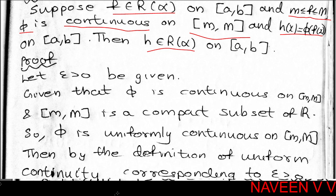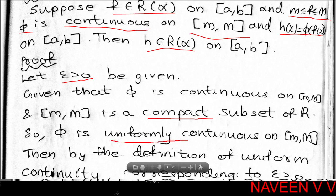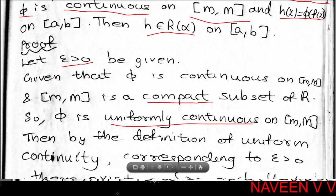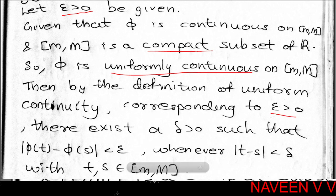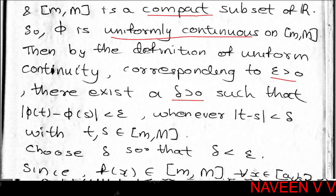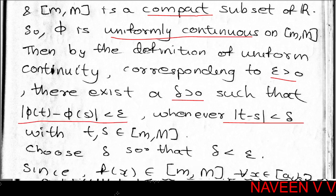Since φ is continuous on closed interval [m, M], and [m, M] is a compact subset of the real line, every continuous function on a compact set is uniformly continuous. So φ is uniformly continuous on [m, M]. By the definition of uniform continuity, corresponding to epsilon > 0, there exists δ > 0 such that |φ(t) − φ(s)| < epsilon whenever |t − s| < δ, with t, s in [m, M].